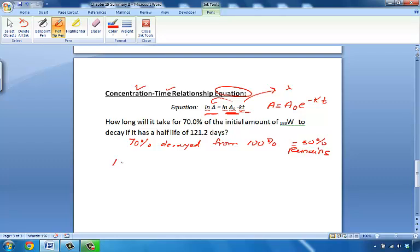So, if I looked at LN of A equals LN of A-naught minus KT, the original amount at time zero was actually 100%. So, LN of 100.